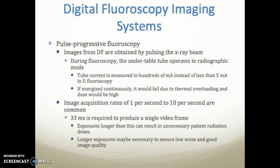In a digital fluoroscopic imaging system, you have pulse progressive fluoroscopy. Images are obtained by pulsing the x-ray beam. During fluoroscopy, the under-table tube operates in radiographic mode, with tube current measured in hundreds of mA instead of less than 5 mA in a conventional II. If energized continuously, the tube would fail due to heat overloading. Image acquisition rates of 1 to 10 per second are common. 33 milliseconds is required to produce a single video frame; exposures longer than this result in unnecessary patient dose, though longer exposures may be needed for low noise in pediatric cardiac imaging.